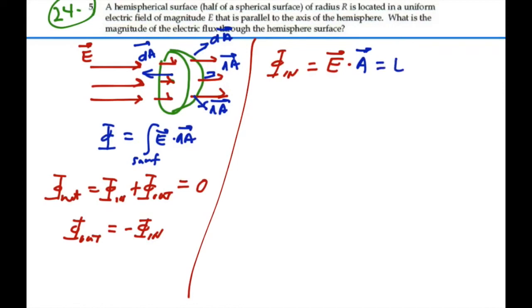which would be E times the area times the cosine of the angle between those two vectors. So this is going to be equal to E times the area of that circle, which is pi R squared, times the cosine.